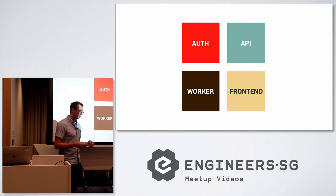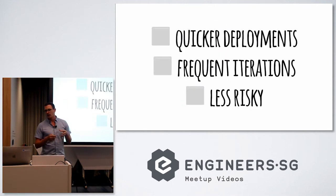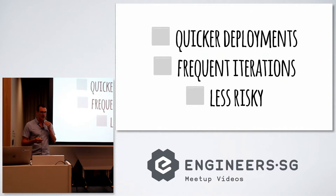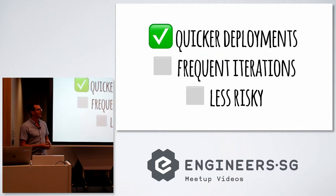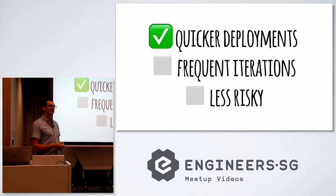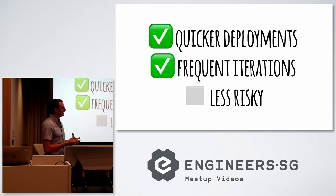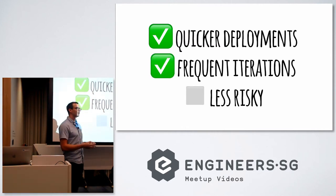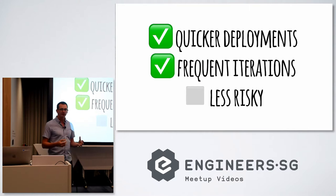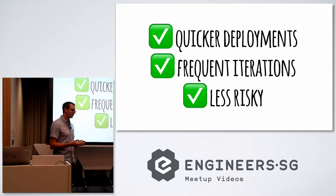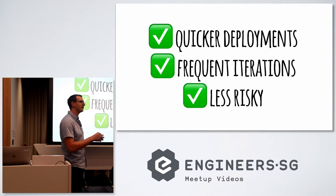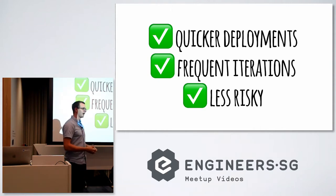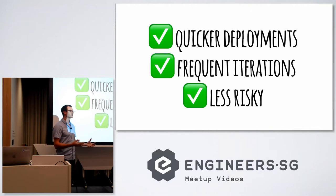We thought it was a good idea because we could have quicker deployments. Everything would be separated and could be released independently. Each team could work on a single feature. And it's also overall less risky, because if a component goes down, it's just that component — it doesn't take down the entire system. As developers, we said this is a great idea and we should keep doing it as much as we can.